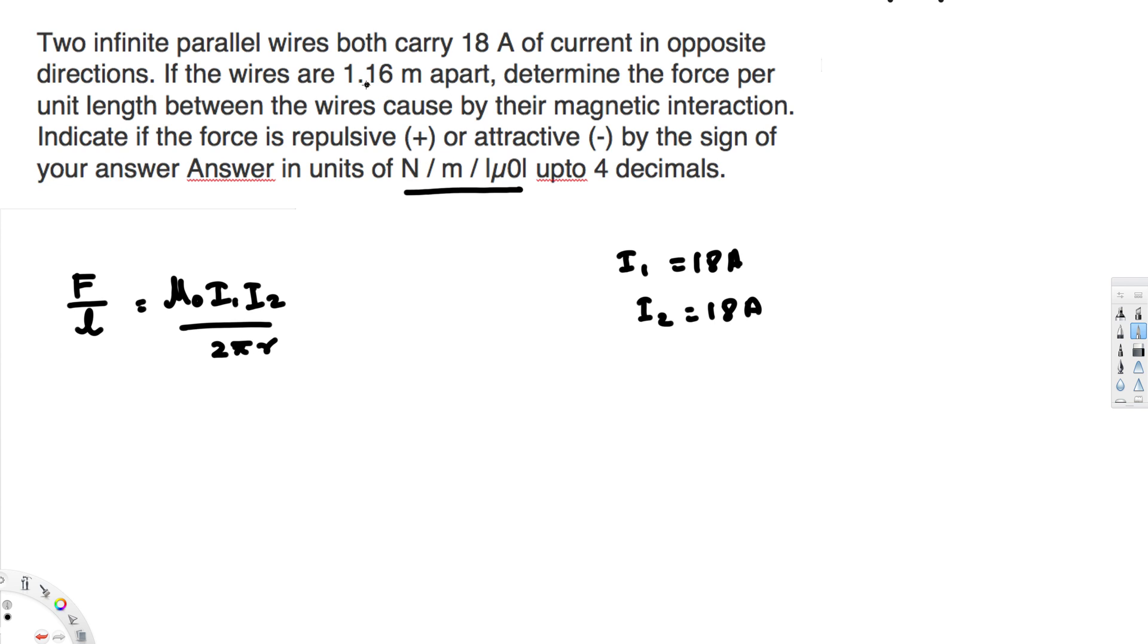We have the distance, 1.16 meters apart. That's our R value. R is 1.16, so we can now apply this in the equation.